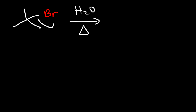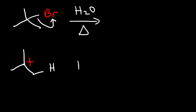The first step in the mechanism of the E1 reaction is that the leaving group leaves — in the case of alkyl halides — and so we're going to get a tertiary carbocation. Now the last thing we need to do is use water as a base. Water is going to abstract a proton. The carbon-hydrogen bond is going to break, and those electrons will be used to form the pi bond.